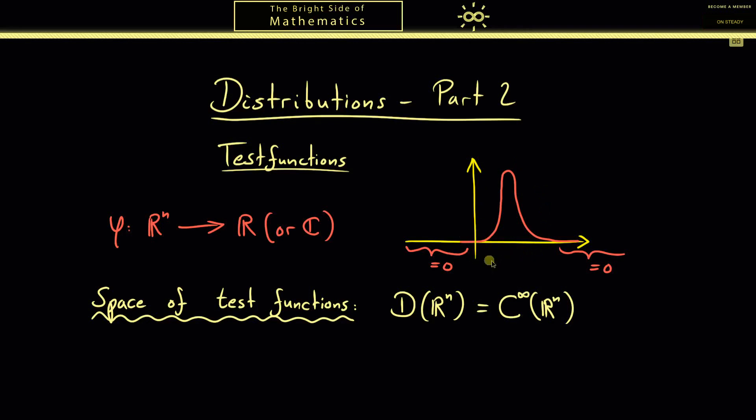And the second property was that the function is the zero function outside of a bounded set. Such functions are called functions with compact support and we denote that with a lower case c here. So these are the two important properties when we talk about the test functions, so please remember them and what exactly the support is, I will explain in the end of this video.